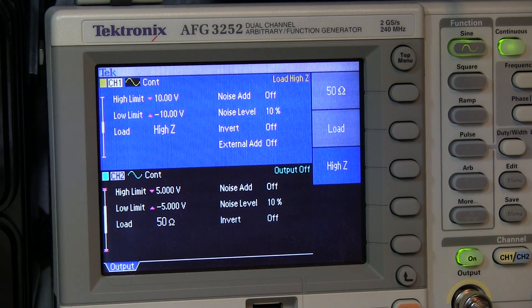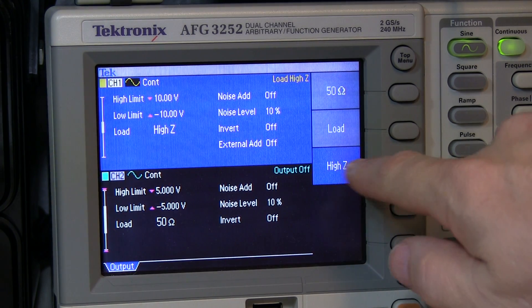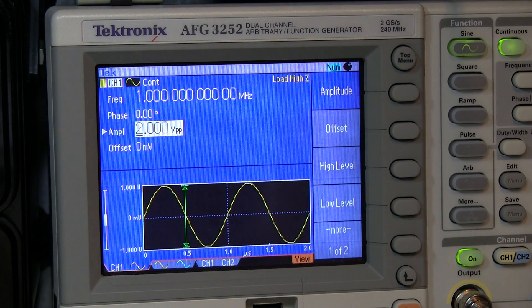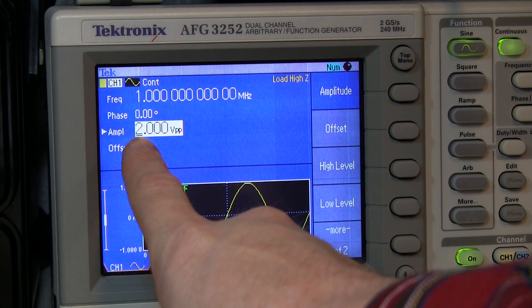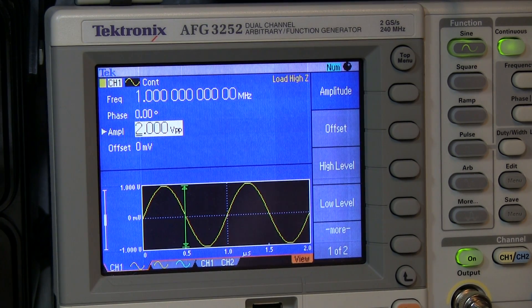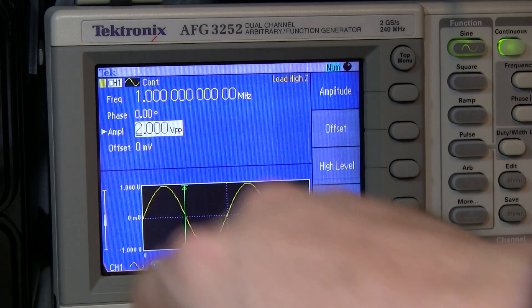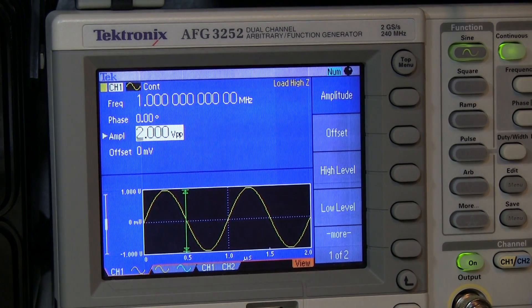If you've got a load impedance that's a couple of orders of magnitude greater than 50 ohms, high Z will be accurate enough to give you that correct result. So now by selecting that high Z, let's go back to our amplitude control, and we can see the amplitude has now been jumped to two volts peak to peak.